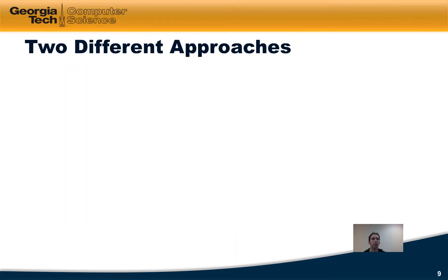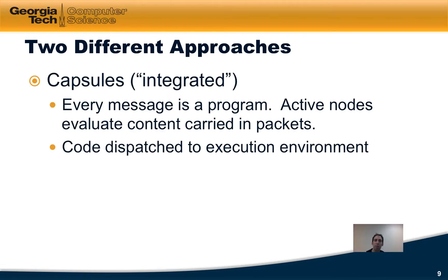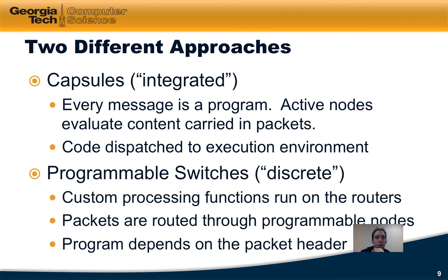There are two different approaches to active networks. The first was a rather extreme approach: every packet actually carried a program, and active nodes along the network path would evaluate that code being carried in the packet, dispatching it into an execution environment running on a programmable switch or router. The other approach looks a lot more familiar — almost like SDN — where code would be installed on programmable switches, which would then perform custom processing on packets depending on values in the packet header fields, essentially dispatching packets to the appropriate code block based on header values.